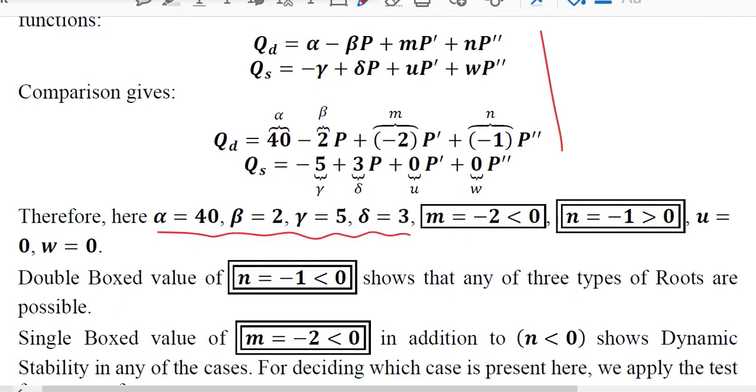The consequence would be that we will be getting these values. m will be there, n will be there, and you know m and n they have very high significance when it comes to the judgment of the nature of the roots and the dynamic stability. So we start with n usually and we see that it is negative. It should be less than 0. So it is negative and m is also negative.